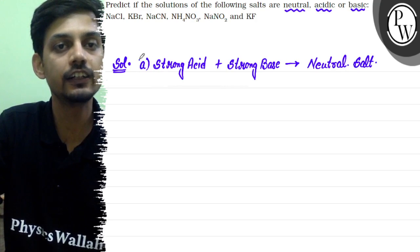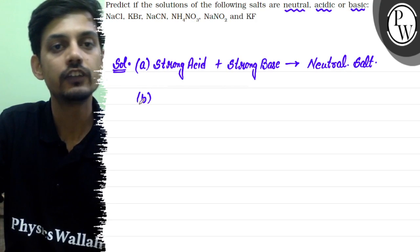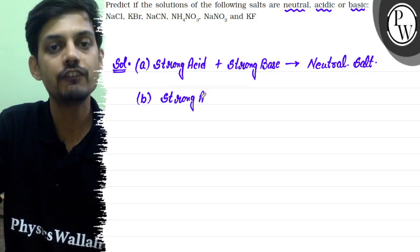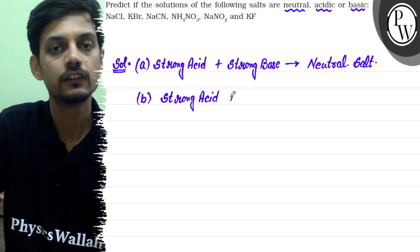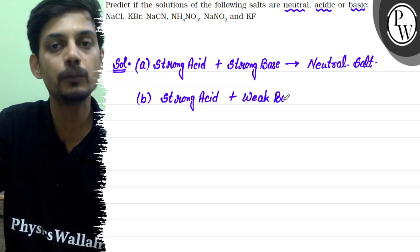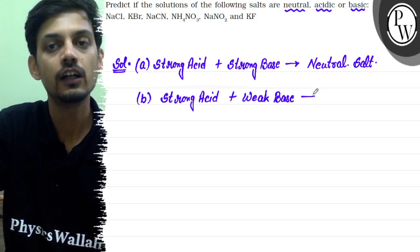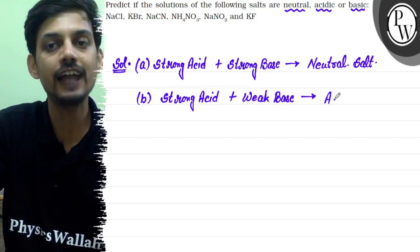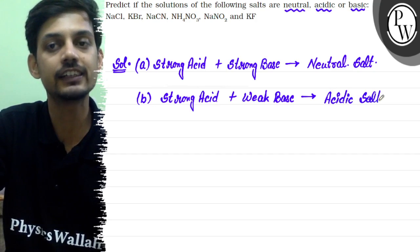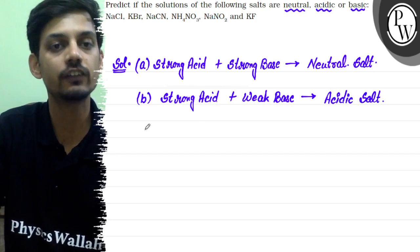The second category of salts is formed by the neutralization of a strong acid with a weak base. Because the basic nature is weak, the acidic nature is not fully neutralized, and the salt has residual acidic nature. So such salts behave as acidic salts.